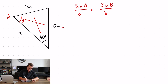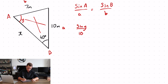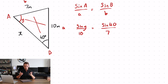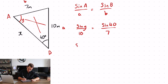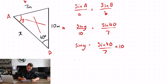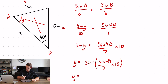Opposite angle A is lowercase a; my other angle will be B, opposite lowercase b. Let's put it into the formula: sine Y over 10 is equal to sine 40 over 7. Using your knowledge of how to solve a sine rule — there's a previous video on this — sine Y equals sine 40 over 7 times 10. So Y is equal to the inverse sine of sine 40 over 7 times 10, which gives you an angle for Y of 66.7 degrees.